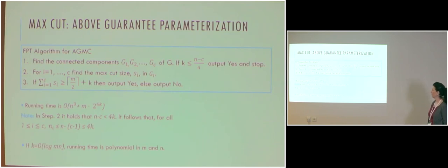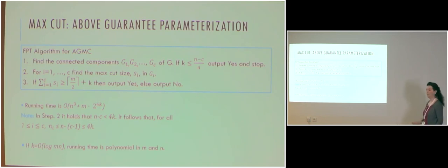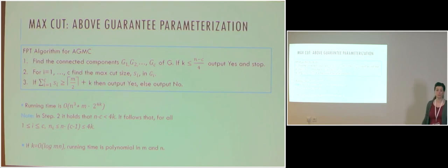For the running time, we first find the connected components, then find the max cut in each connected component. If we reach step 2, then n minus c is upper bounded by 4K, meaning the number of vertices in each connected component is upper bounded by 4K. So even using brute force, we have an FPT time algorithm. Furthermore, if K is O(log mn), then the running time is polynomial.